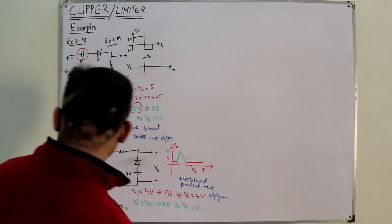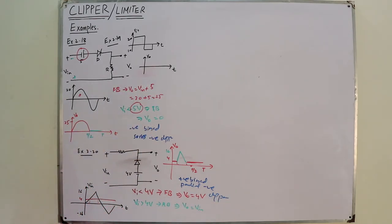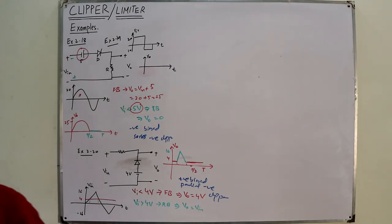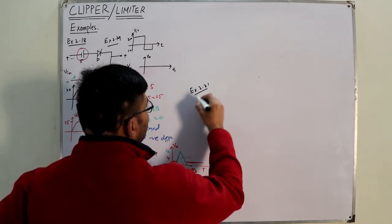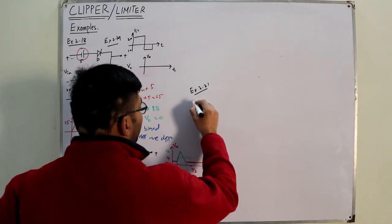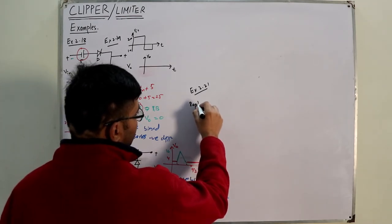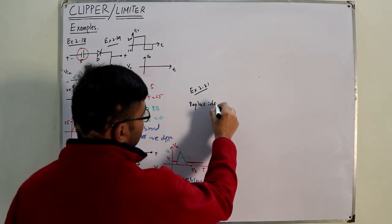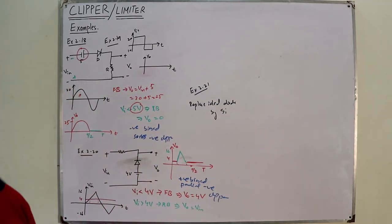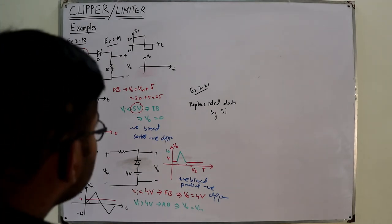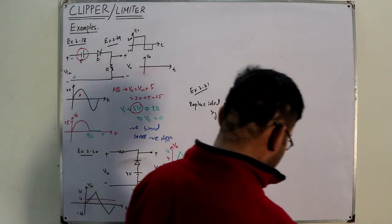Example 2.21 requires you to replace the ideal diode with a silicon diode in the same circuit — you can do that yourself.